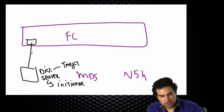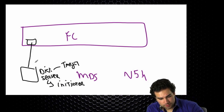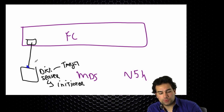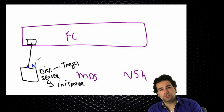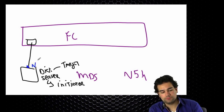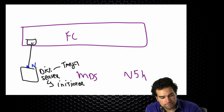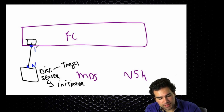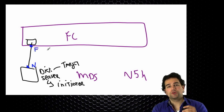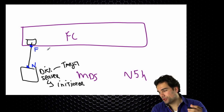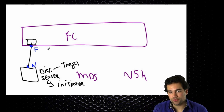How are these ports called? Because this is a node on the network, seen from the host, this is called a node port — N port. Seen from the switch, this is a fabric port. So a node port always communicates to a fabric port; N port always talks to F port.